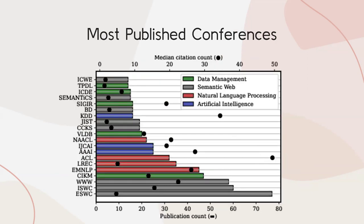When seeing the main target conferences for open knowledge graph research, we find that they are mainly related to semantic web, data management, natural language processing, or artificial intelligence. ACL, the primary conference for natural language processing, is surprisingly having the best citation impact for open knowledge graph research, while semantic web conferences — primarily ESWC, ISWC, and WWW — are the research venues publishing the most open knowledge graph research.